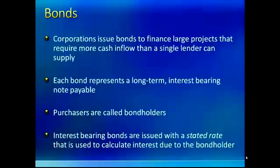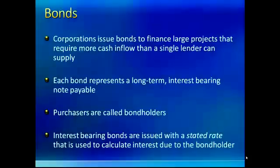These interest-bearing bonds are issued with a stated rate used to calculate the interest due to bondholders. They used to call this rate a coupon rate because back in the day, when physical bonds were actually mailed to bondholders, there would be coupons attached to the bond that you would clip off and mail in to get your interest payment. Now everything's electronic, so they've gotten away from actual coupons, but you'll still see the term 'coupon rate' used.